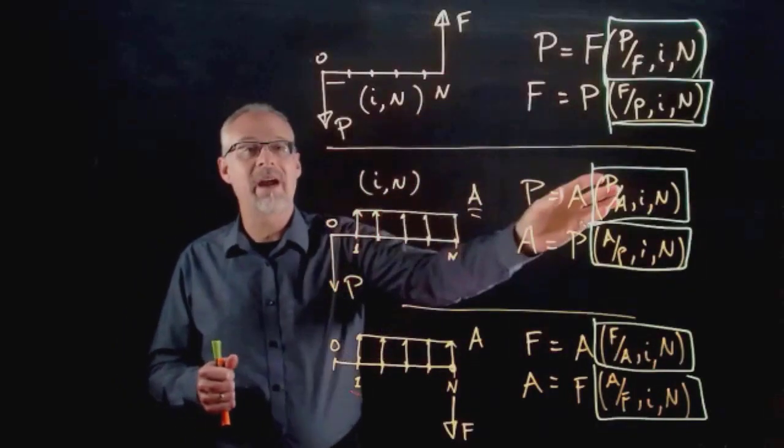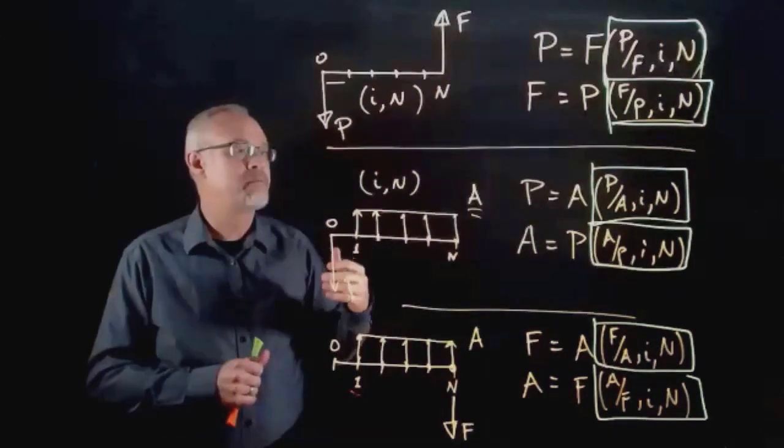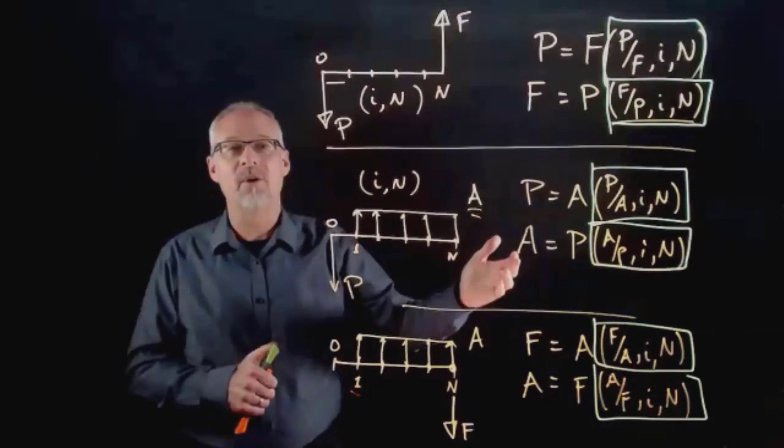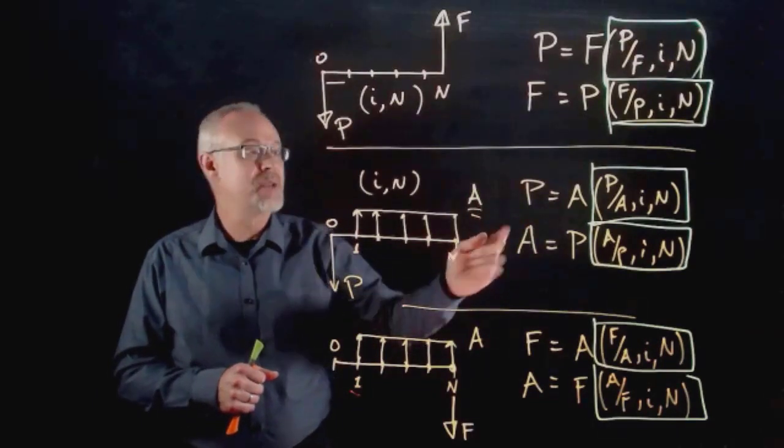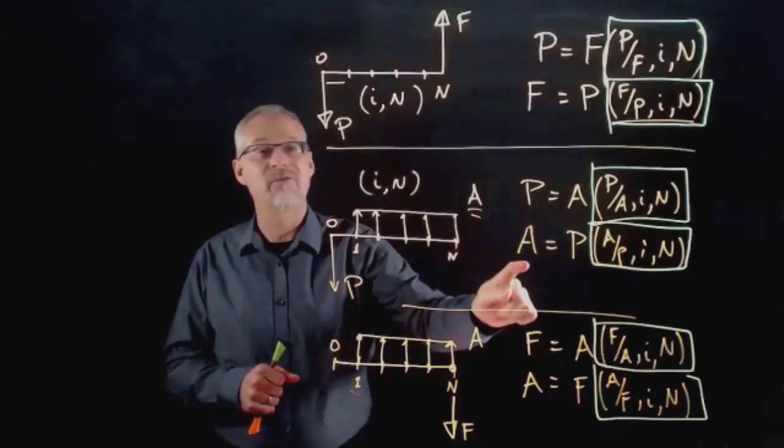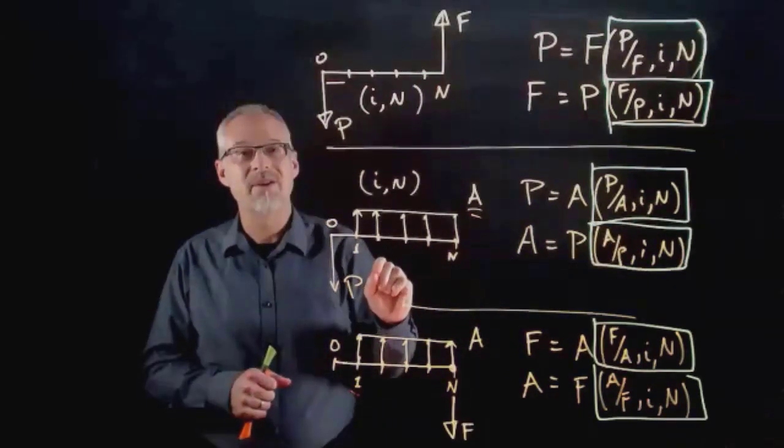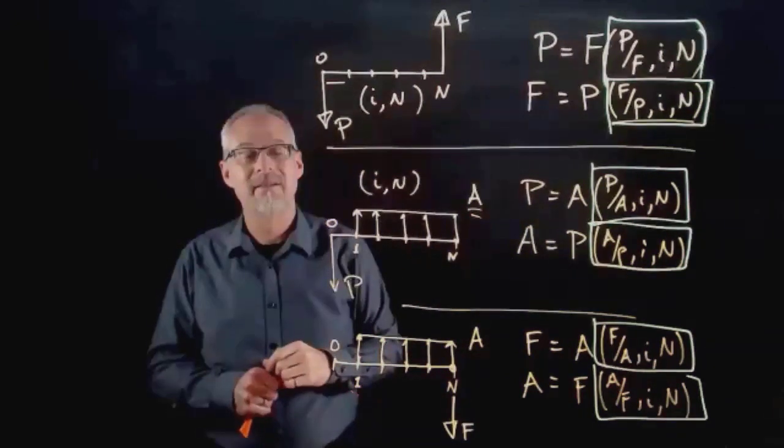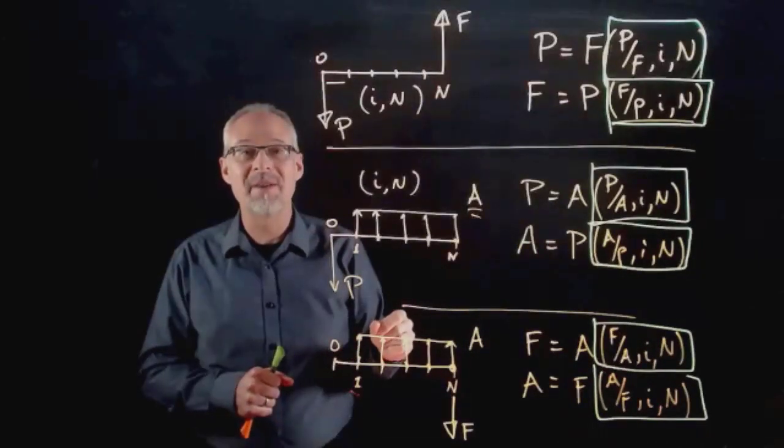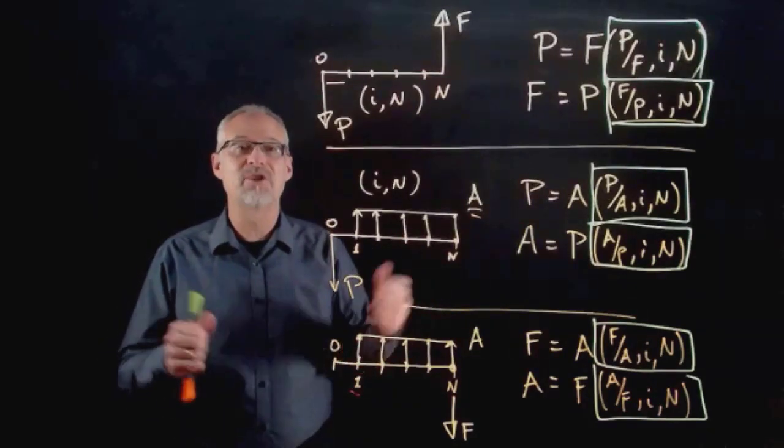Once you've done that, you can look at the time value of money equation and say, what am I missing, what do I know, what do I not know? Sometimes it's not just a case of looking for a P given an A or looking for an A given a P. Sometimes you're not given the i, sometimes you're not given the n.